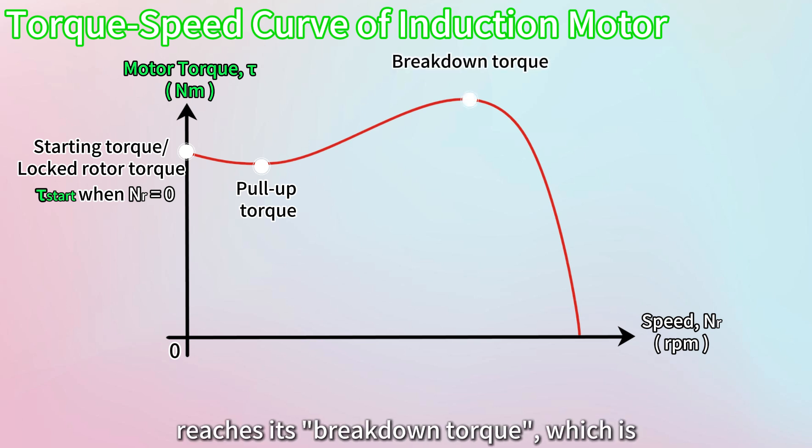Following this, the motor reaches its breakdown torque, which is the maximum torque it can deliver before it stalls. This breakdown torque represents the motor's peak capability to handle overloads without failing.